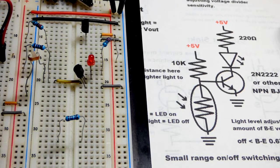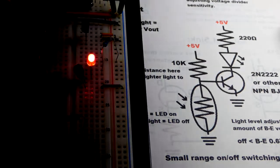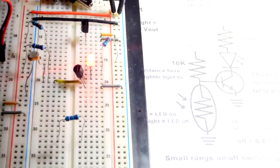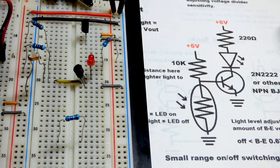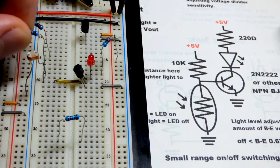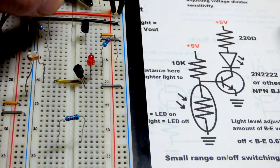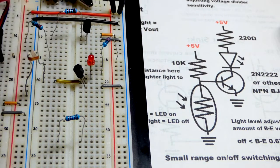So we have it where the LED is off when it is bright and on when it is dark. If we want the opposite situation, we just have to put the light-dependent resistor on the other side of the circuit. But it gets a little more complicated.